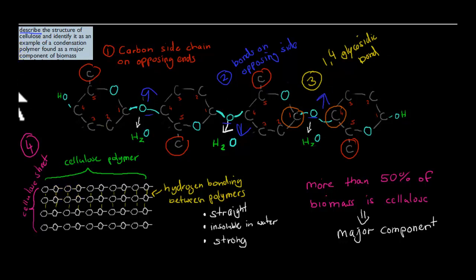Also, each of these is a cellulose polymer and they come in sheets. One polymer, two polymers, three polymers, four polymers. The reason why they come in sheets is because of hydrogen bonding that keeps them together. And it makes it really strong and tough. So we have some characteristics: straight chain, insoluble in water, and very strong. That's cellulose itself. And identified as an example of a condensation polymer found as a major component of biomass. More than 50% of biomass is cellulose, thereby it's a major component.